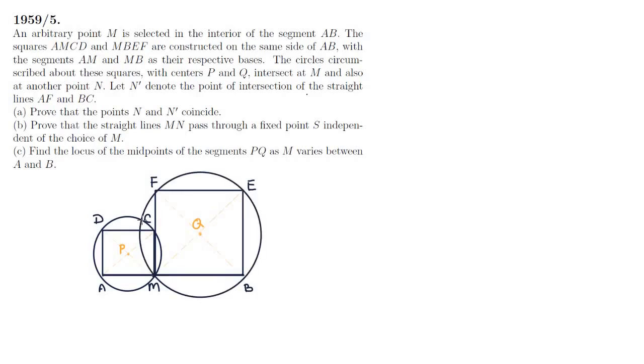There we go, and we see that the circles intersect at M and N, and N' is the point of intersection of AF and BC. We're now ready for part A.